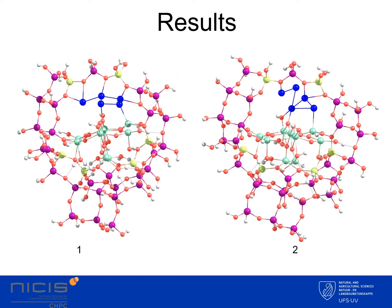After analyzing the results and checking the literature, it was specified that when copper-5 binds with the substrate, it can only give two geometries: a planar or a trigonal bipyramidal geometry. When analyzing our results, we found that only two configurations fitted this profile — configuration one and configuration two, as shown on the slide. These two configurations were then taken forward to study the carbon dioxide reduction.